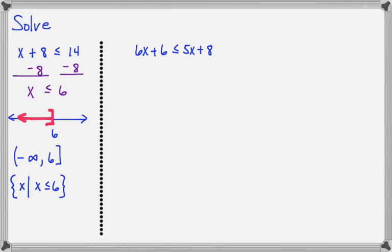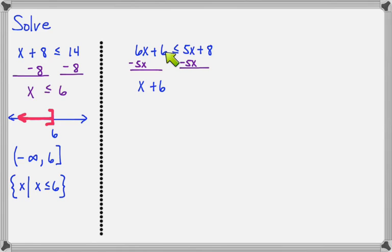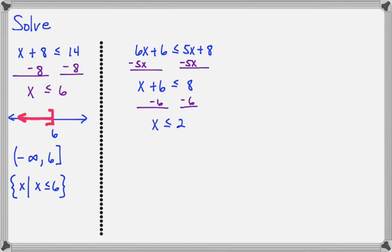Here is another inequality: 6x plus 6 is less than or equal to 5x plus 8. Just like with an equation, we start by subtracting 5x from both sides. Now 6x minus 5x is 1x, and we have plus 6, which is less than or equal to 8. Next, we subtract 6 from both sides to eliminate the plus 6, and we get x is less than or equal to 2.